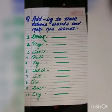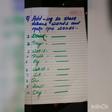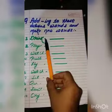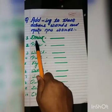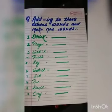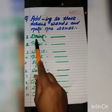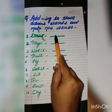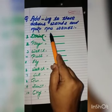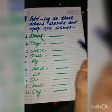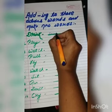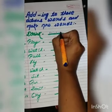Now see question number 2. Add ing to this accent word and make new words. You have to add ing with this word to make a new word. First one is drink — D-R-I-N-K. If we add ing then it becomes drinking — D-R-I-N-K-I-N-G. Drinking.